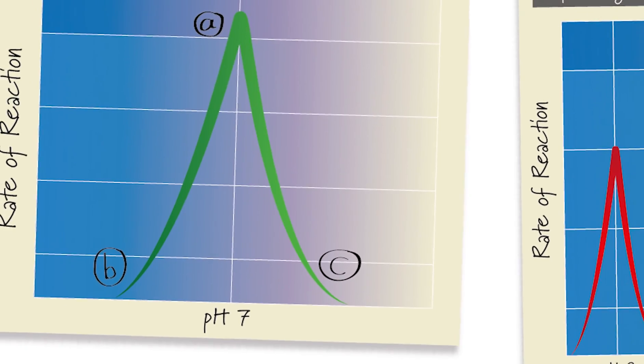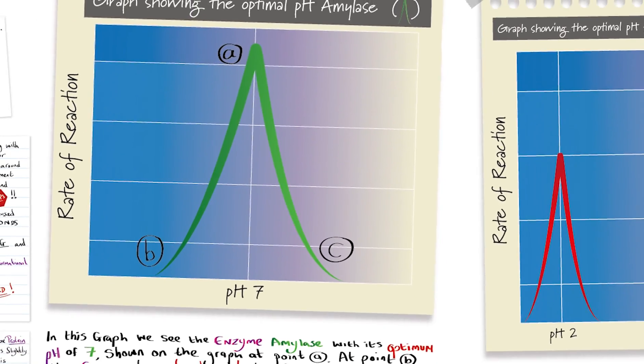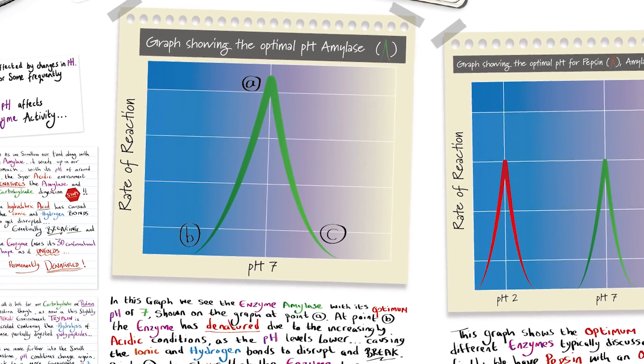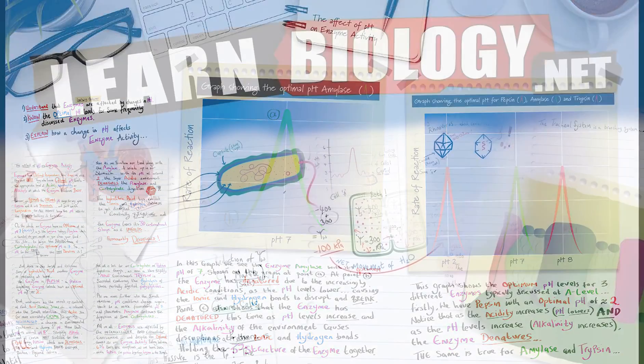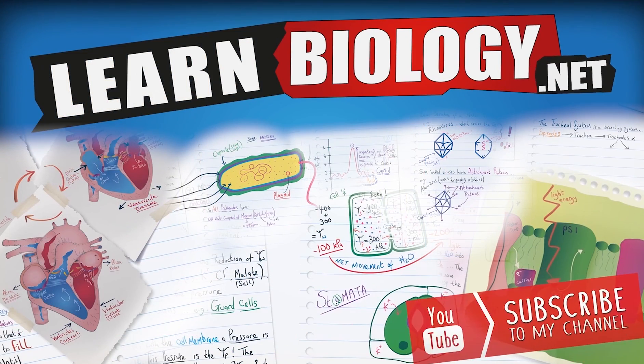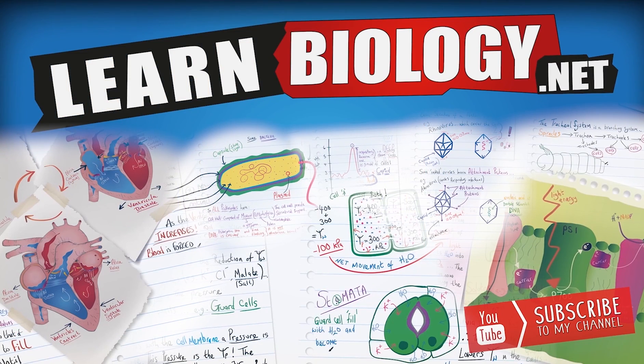Okay, so that brings us to the end of this lesson on how pH affects enzyme activity. In the next lesson, we'll take a look at how concentration of substrate and concentration of enzyme can affect overall enzyme activity. So until then, take it easy.